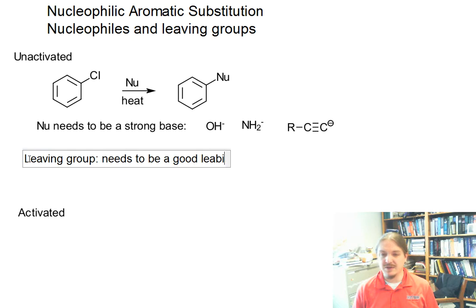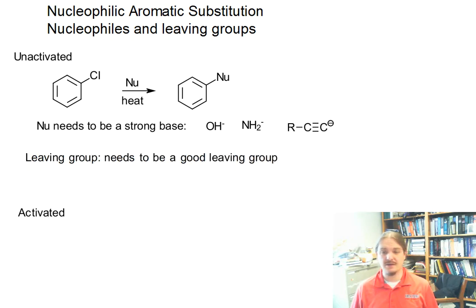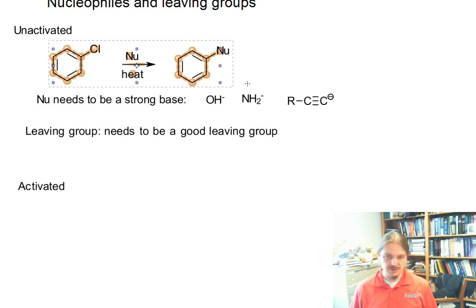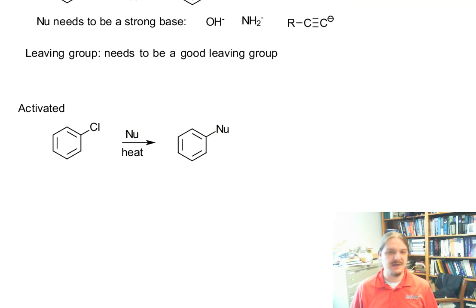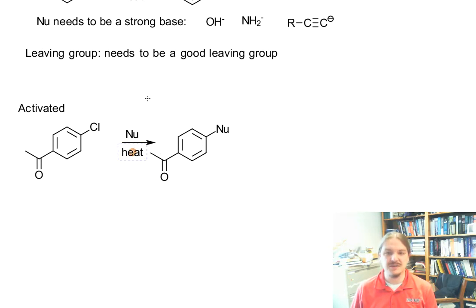We need a really good leaving group because the leaving group happens early in the process. Now, when we modify this reaction to include an electron-withdrawing group at the correct spot — and in this video let's use a ketone as my electron-withdrawing group — always good to use a different example.